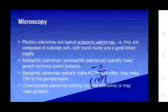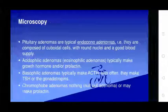Microscopically, typical endocrine adenomas are composed of cuboidal cells with round nuclei and a good blood supply. Acidophil adenomas typically produce growth hormone and prolactin. Basophil adenomas typically produce ACTH; less often they produce TSH or gonadotrophins. Chromophobe adenomas (null cell adenomas) produce nothing or may make prolactin.